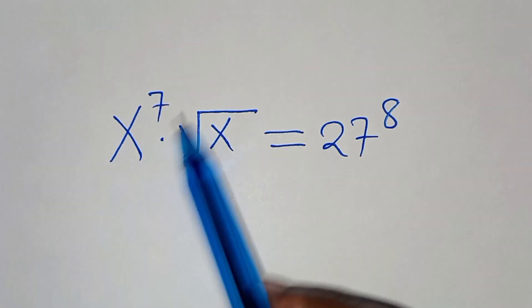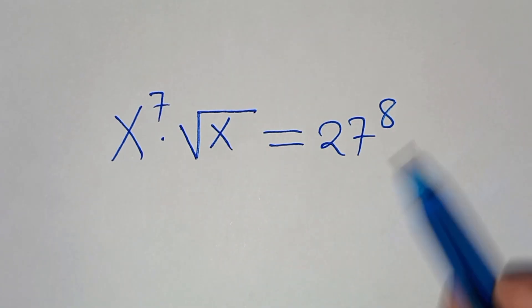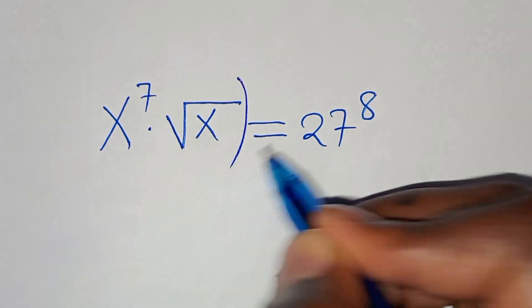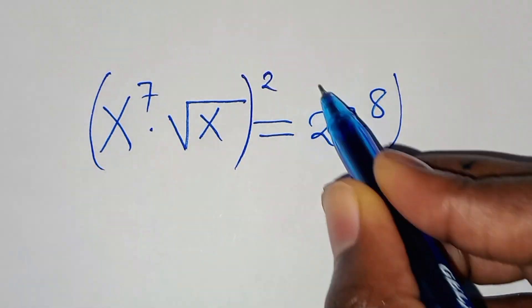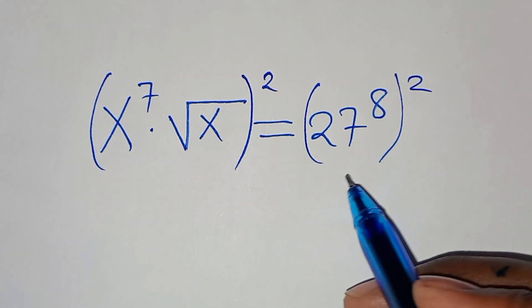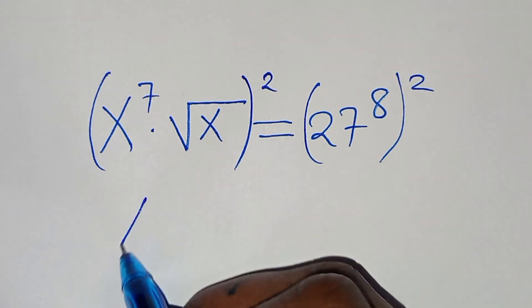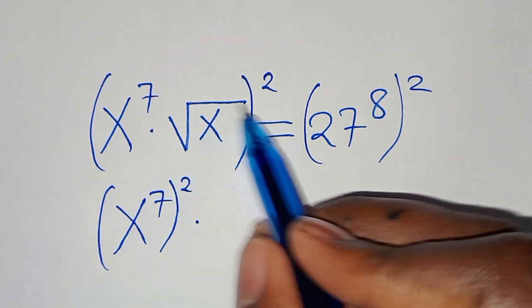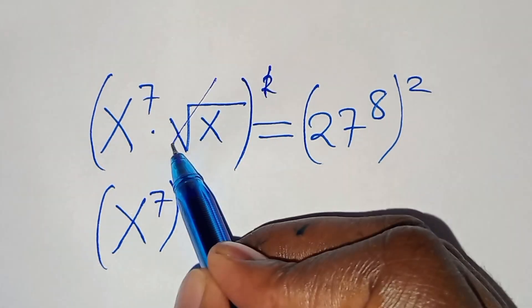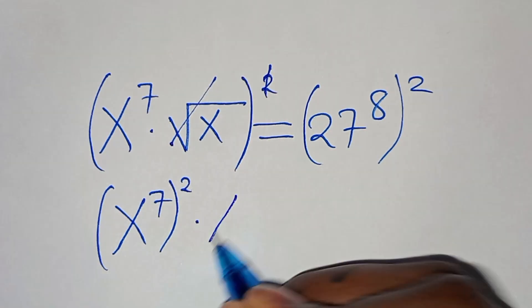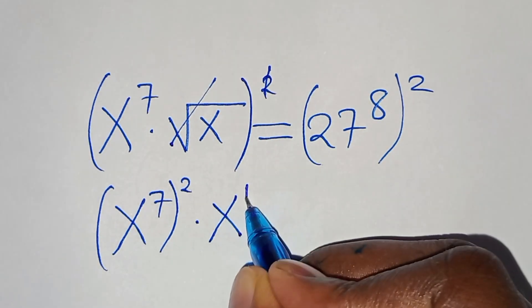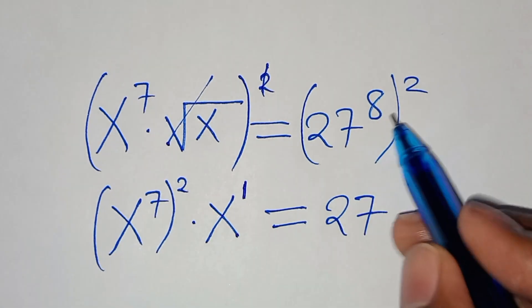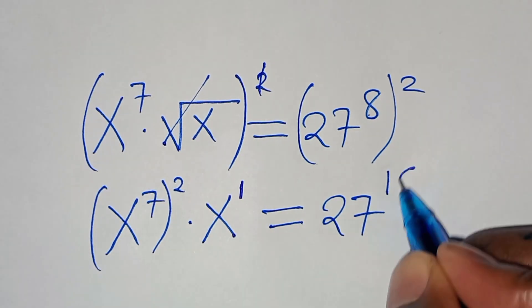We have x to the power of 7 times the square root of x equal to 27 to the power of 8. The next step is to square both sides again, so that we have x to the power of 7 raised to the power of 2, multiplied by the square root of x squared, which eliminates the square root sign, giving x to the power of 1. This equals 27 raised to the power of 8 times 2, which is 16.